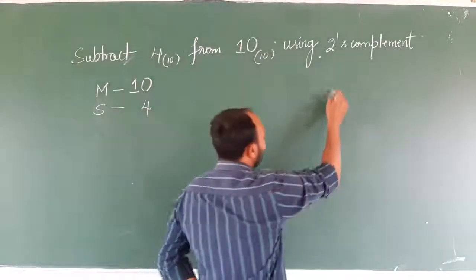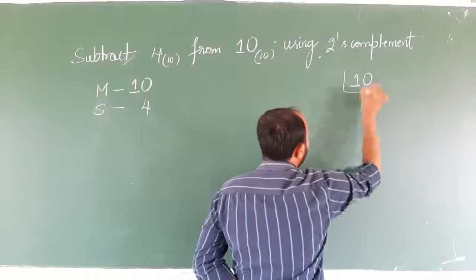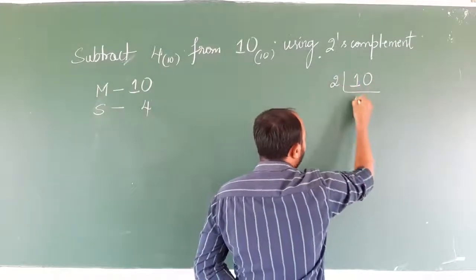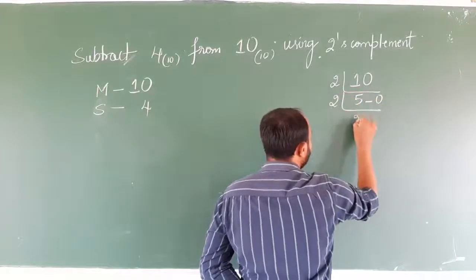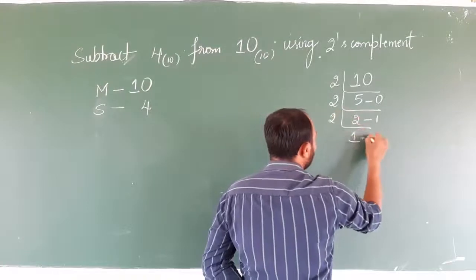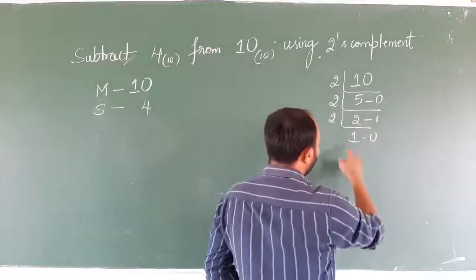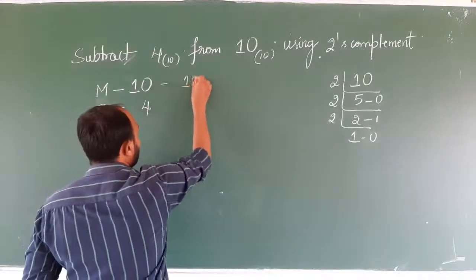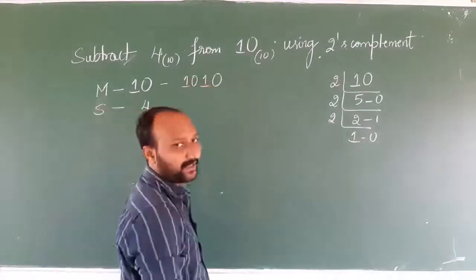First, let us find the binary equivalent of 10 and 4. Binary equivalent of 10: two fives are 10, remainder 0; two twos are 4, remainder 1; two ones are 2, remainder 0. So the binary equivalent of 10 is 1010.